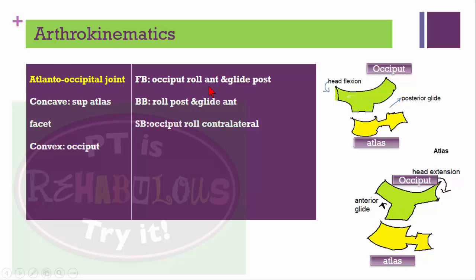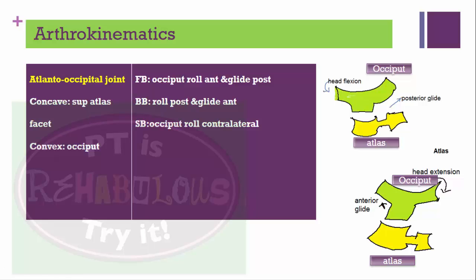Arthrokinematics of the atlanto-occipital joint: the atlas is concave and the occiput is convex. During forward bending or head flexion, the occiput rolls anteriorly and glides posteriorly. During head extension or backward bending, the occiput rolls posteriorly and glides anteriorly. During side bending, the occiput rolls contralaterally.